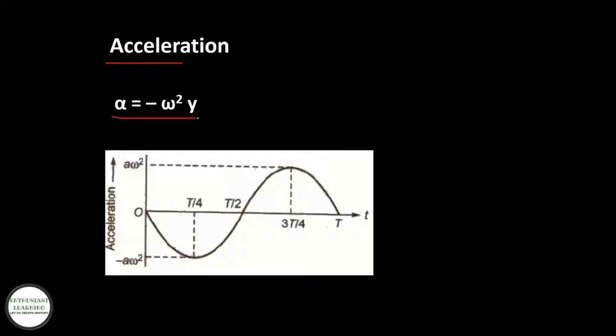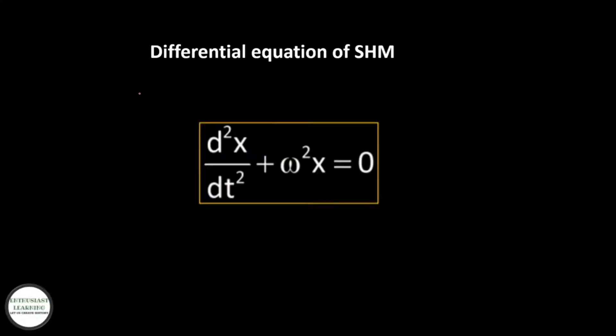Acceleration is given by a = -ω²x. Here is the graph of acceleration versus time. The differential equation: d²x/dt² + ω²x = 0.